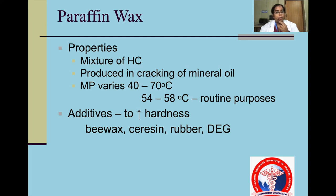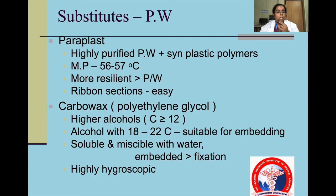Paraffin wax is produced by the cracking of mineral oil. The melting point varies from 54 to 58 degrees Celsius, which is used for routine purposes. Additives that help increase the use of paraffin wax by increasing its hardness include beeswax, saracen and rubber. Substitutes include paraplast and carbo wax, which are more resilient and produce ribbon sections easily.